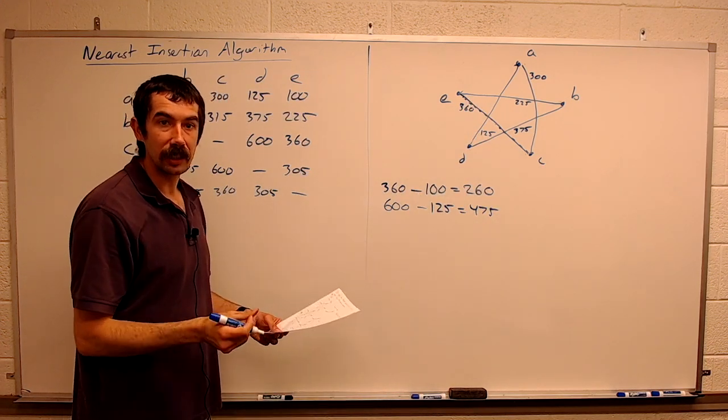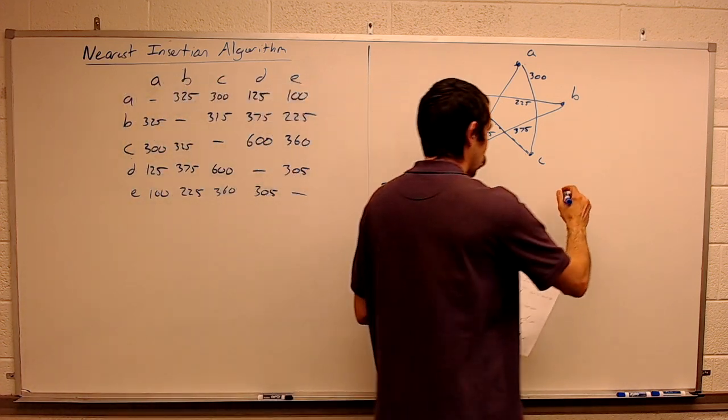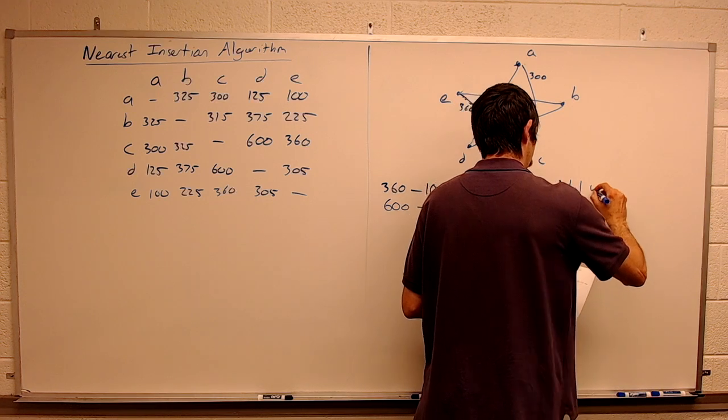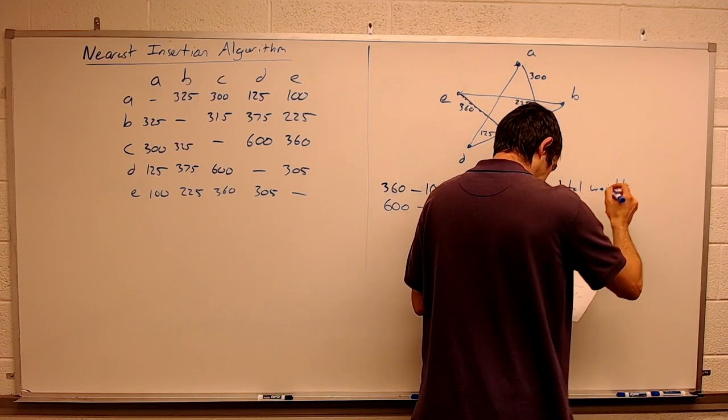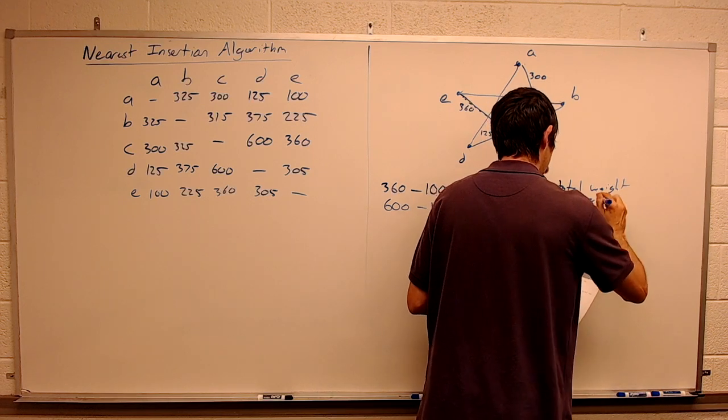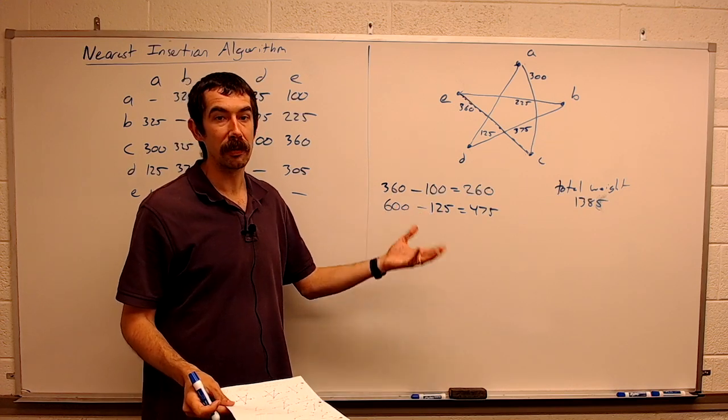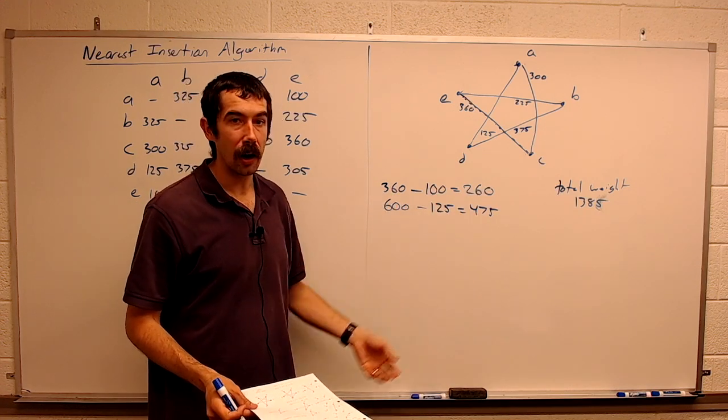We've included, we've got all the vertices in our cycle. We're ready to tally up the weight. When we tally up the weight, we get a total weight of 1385. The best case in this particular graph was 1270. So we weren't that far off.